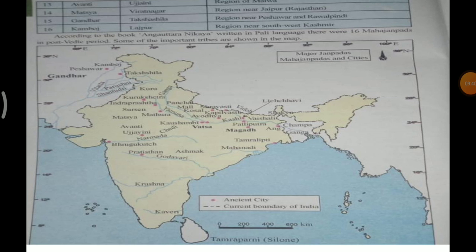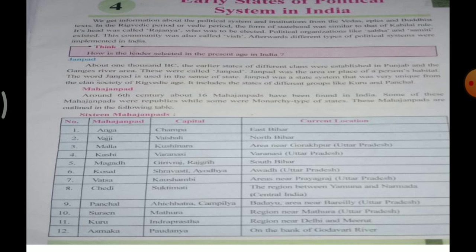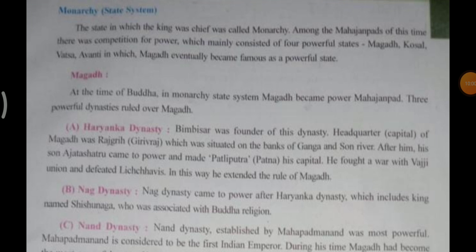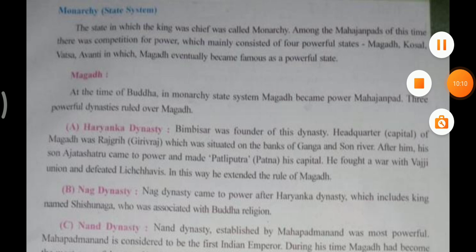Beta, homebook mein aapko karna hai — Mahajanapada kisko kehte hain, Janapada kisko kehte hain, woh aapko likhna hai. Saath mein jo 16 Mahajanapada ka table diya gaya hai woh bhi likhke batana hai. I will tell you about the map. In short notes you will tell me about the Haryanka dynasty, Magadha, Nag dynasty, and Nand dynasty. This is the second part — in the next lecture.